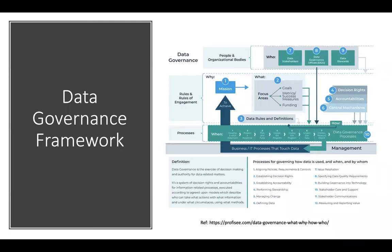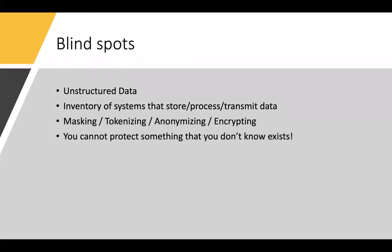If an organization has a data governance function, you answer typical questions like why, who, what, when - largely to answer why you need some data, who's going to have access to that data, when will they have access, and what are the means for accessing it. But let's break this complex diagram into some very simple examples. That takes me to the blind spots.